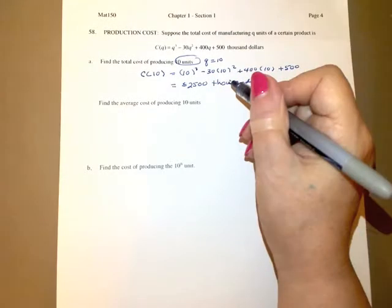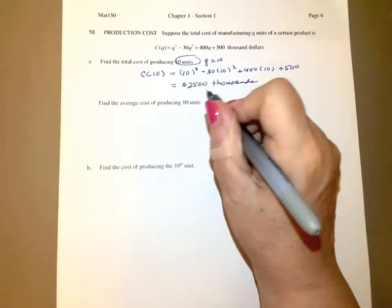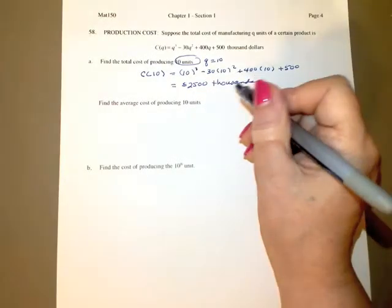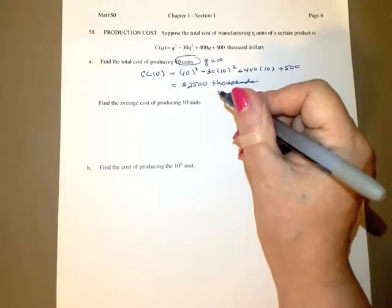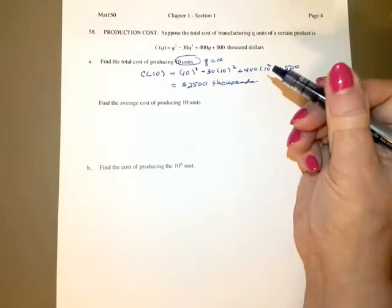And if you wanted to, instead of using the word thousand, you could put three zeros behind that. And that would tell you it's what, 2.5 million.